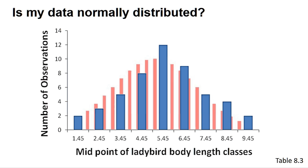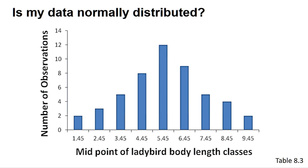This is an important consideration with these tests. They tell you if your data is not normal. What they do not do is tell you that your data is normal. What if the p-value was just above 0.05? The result would be non-significant, but could we really state the data was normally distributed with any certainty? Fortunately, there are a couple of other indicators we can assess.